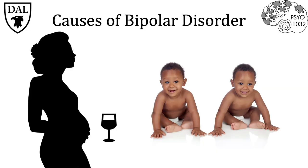Usually an individual with bipolar disorder will experience depression more than mania, and can go periods of time between cycles without experiencing any symptoms. Just like depression, there are both external and internal factors that increase the likelihood of bipolar disorder. External factors include the environment during development, starting as early as the fetal stage — for example, fetuses exposed to large amounts of alcohol are at increased risk. In terms of internal factors, a genetic component has been identified: twin studies show that if one twin has bipolar disorder, there is a 40 to 70% chance the other will also experience it at some point.